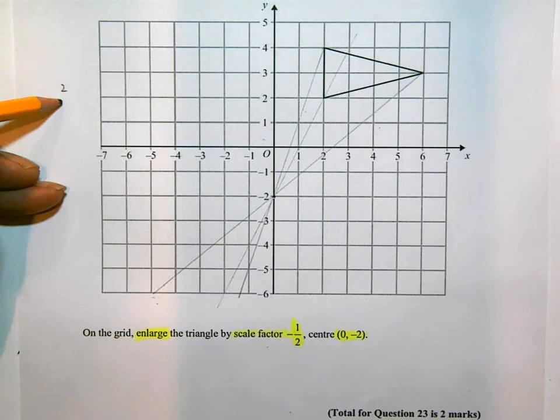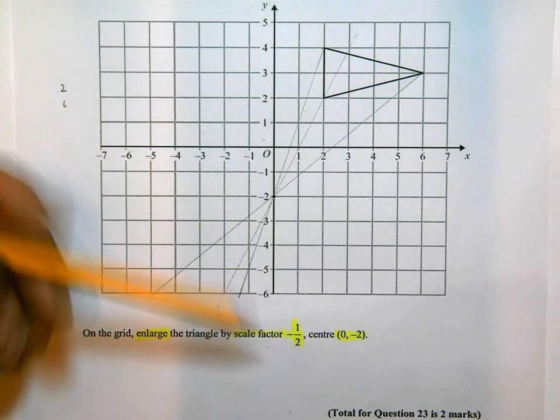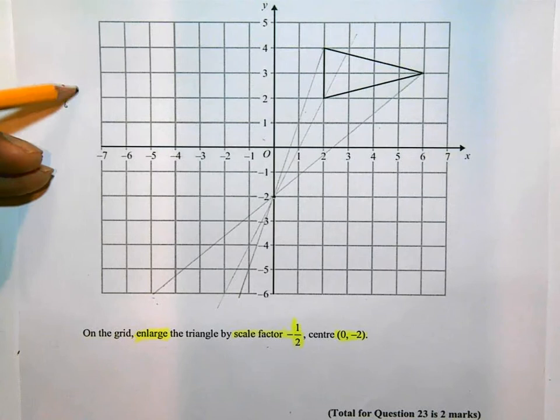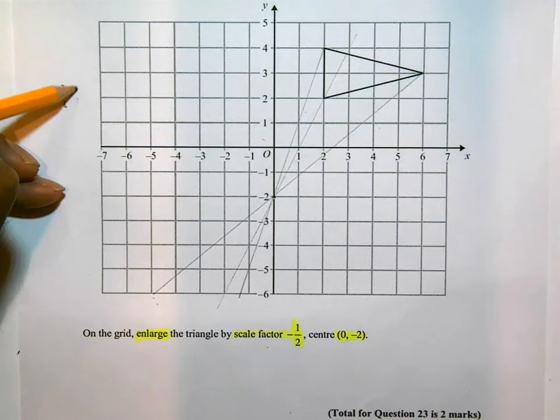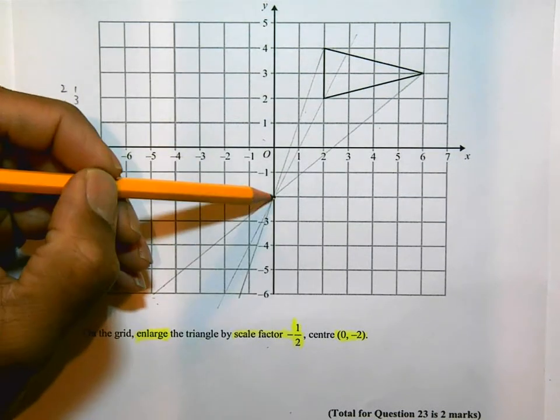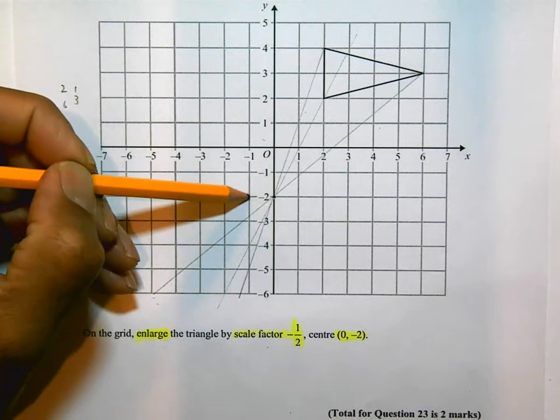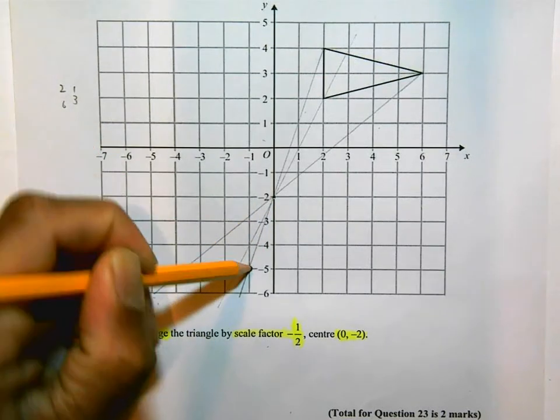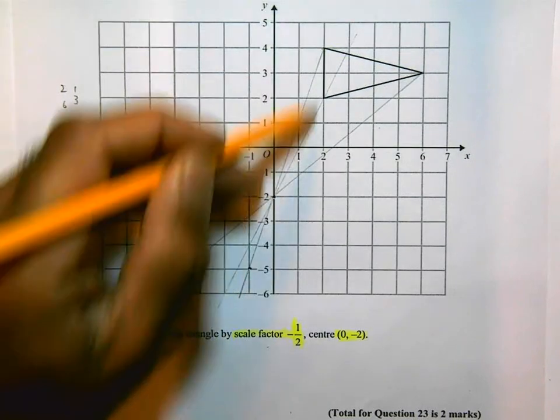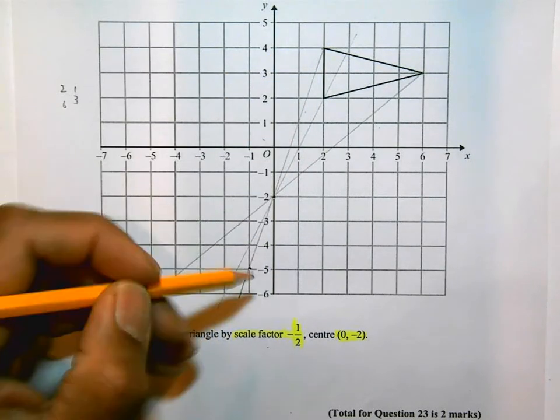I need to do half that, which is going to be 1, 3. And I'm going to do that on the other side. 1 across, 3 down. That takes me to there. And that's on the same guideline that I've just used. And I know that's correct as a result.